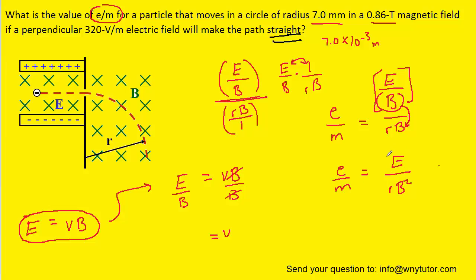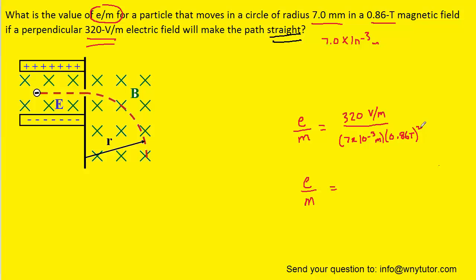And so now, finally, we are ready to plug in the known values. The electric field was given to us in a standard unit. So we can plug in the electric field, the radius, and the magnetic field. So go ahead and plug that into your calculator. Don't forget to square the magnetic field. And you should get roughly 6.2 times 10 to the power of 4.